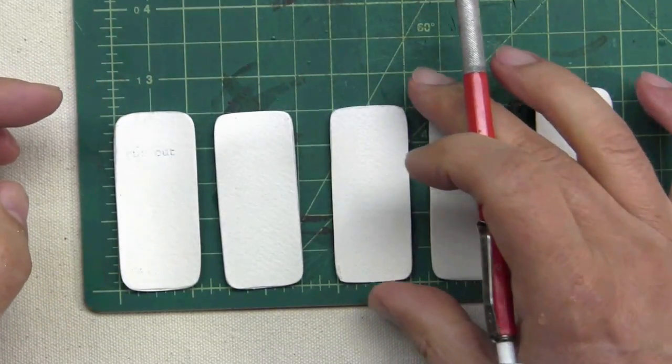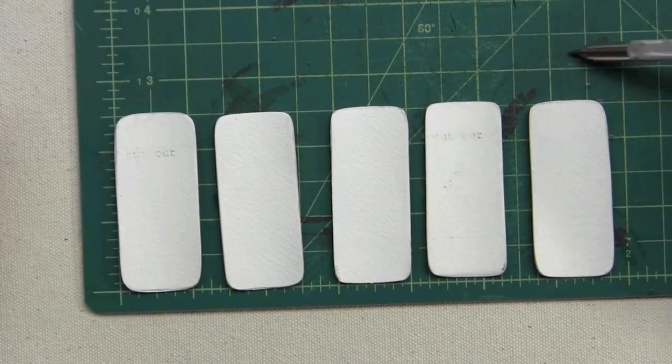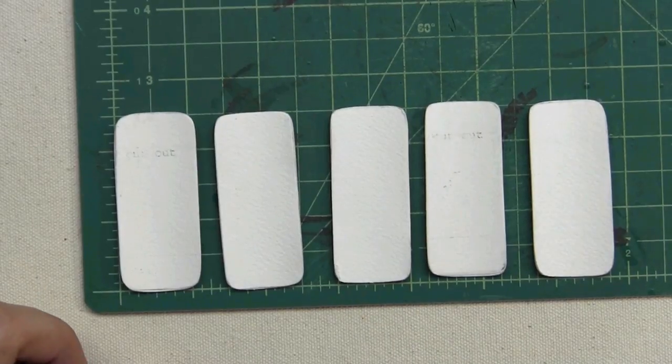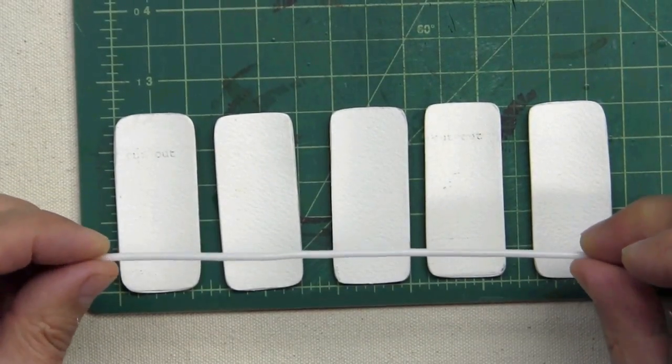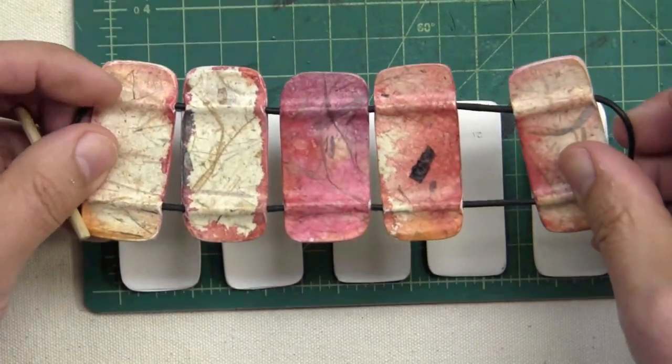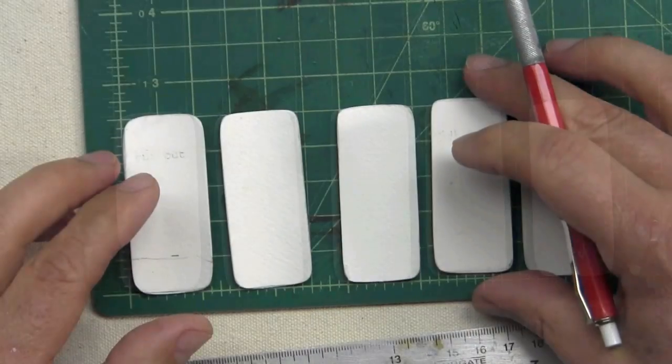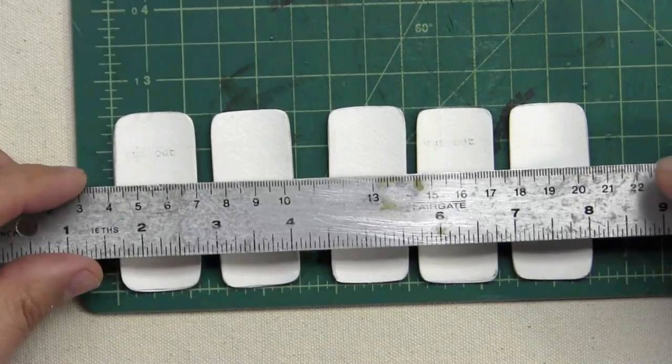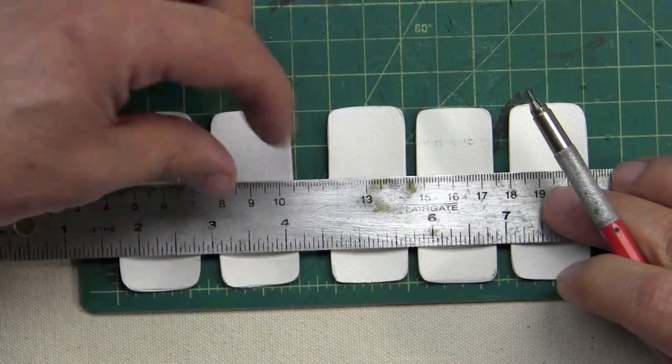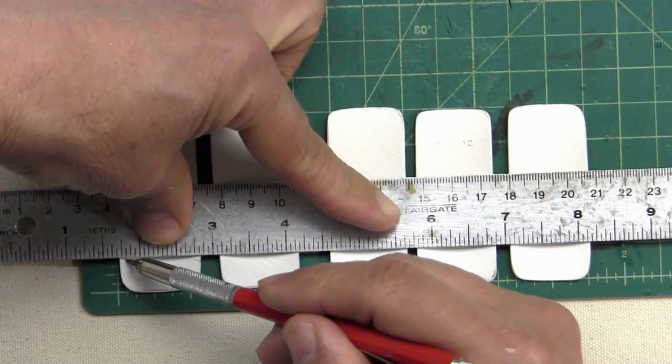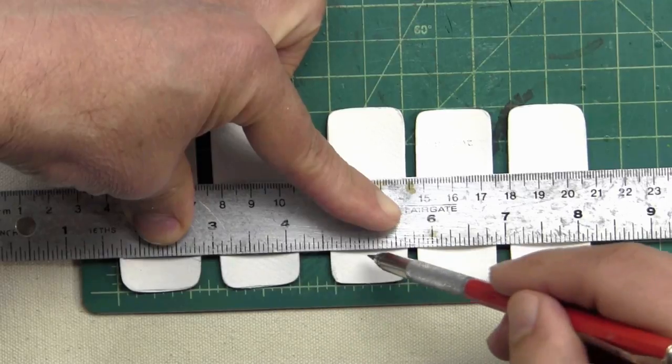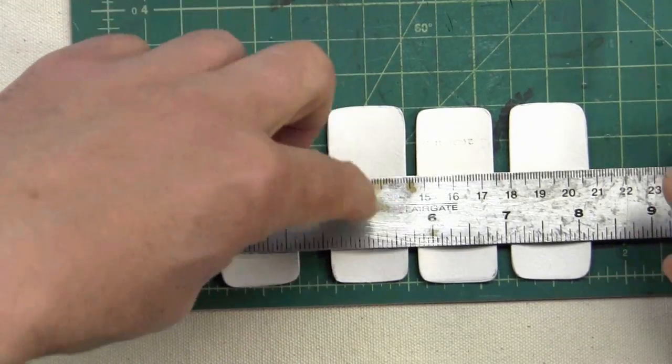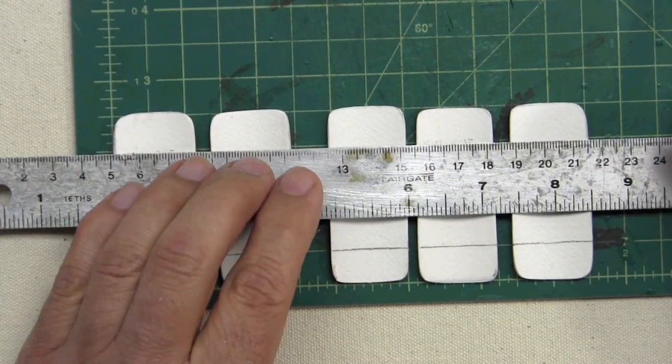So I've lined this up on my cutting board. The cutting board happens to be ruled out, so it makes it very convenient for gauging where I'll apply the wax to create the channel for the cord. That's my half inch mark right there on the cutting board. I will take my ruler, place it across all of them.